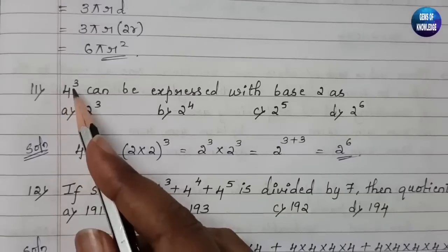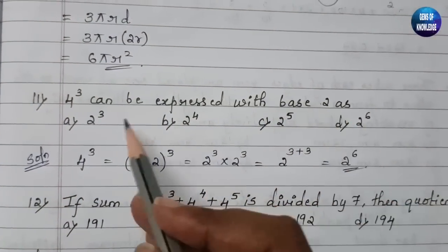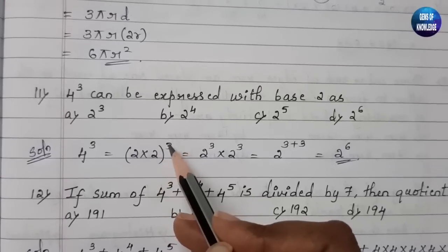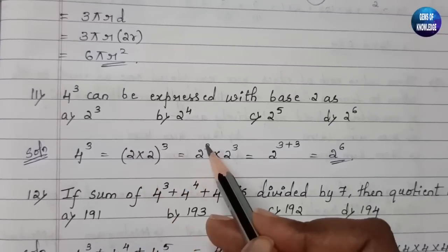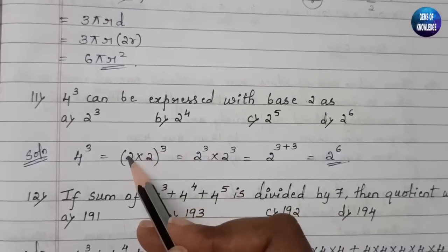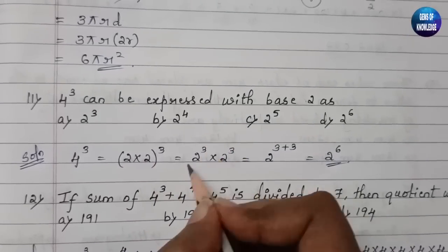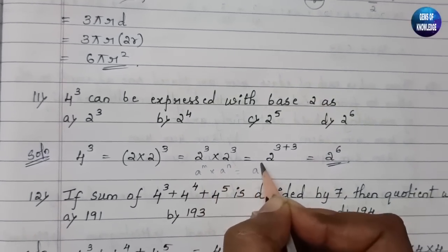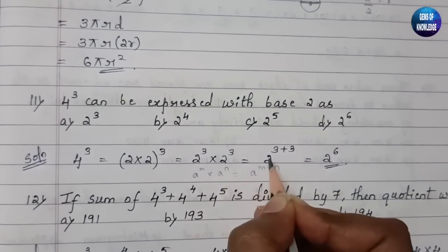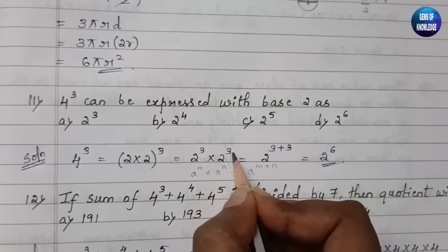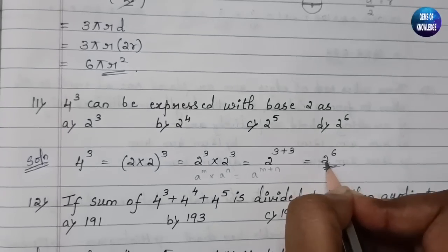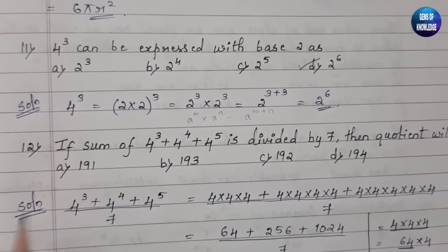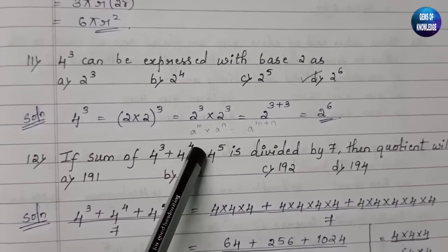The eleventh question: 4³ expressed with base 2. We write 4 = 2 × 2, so 4³ = (2 × 2)³ = 2³ × 2³. Using the identity a^m × a^n = a^(m+n), this equals 2^(3+3) = 2⁶. So option D is the correct answer.